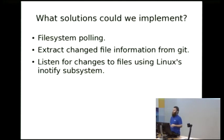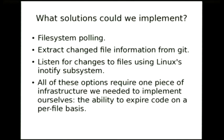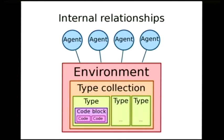If you're not familiar with iNotify, it's a subsystem in the Linux kernel that you can say, please tell me when this file is modified or deleted or renamed or something, and the Linux kernel will then put notifications into a queue and you can then process those notifications once you're ready. The thing with all three of these options is that they require Puppet to be able to remove code on a per file basis, which is something it can't do, only on a per environment basis. So naturally, the first step was to have it be able to expire code.